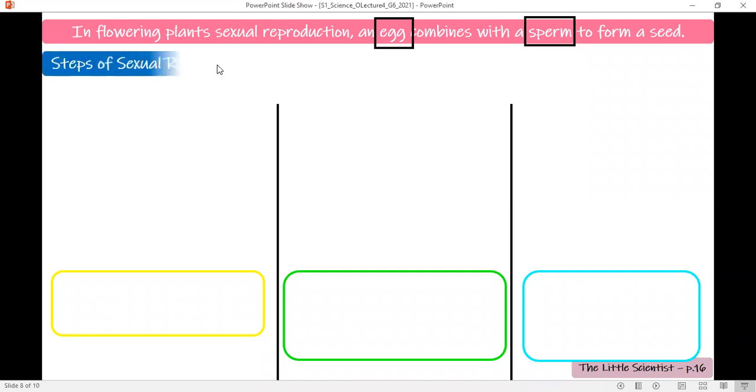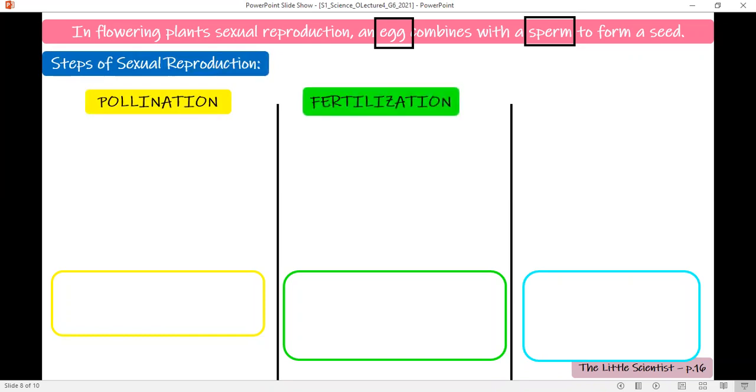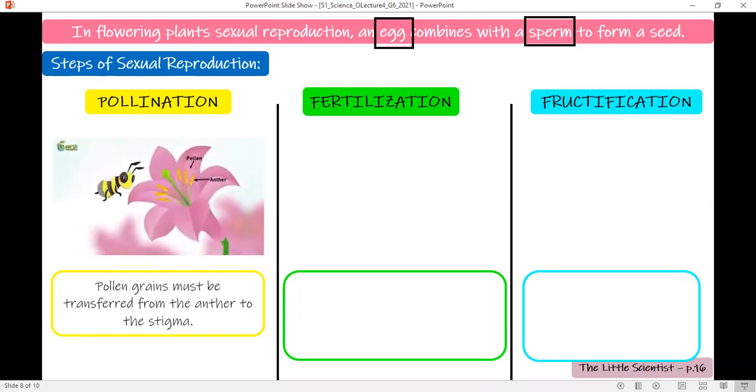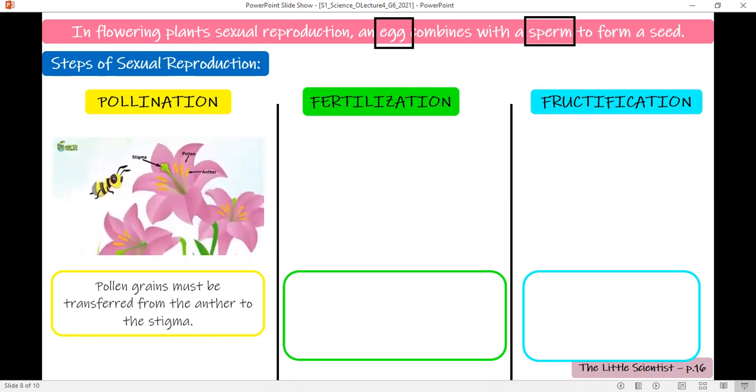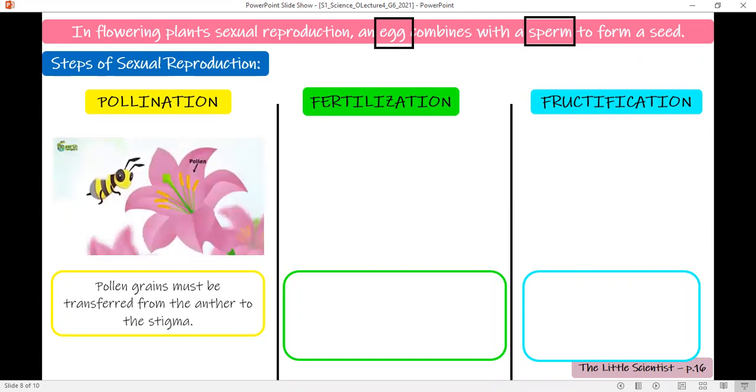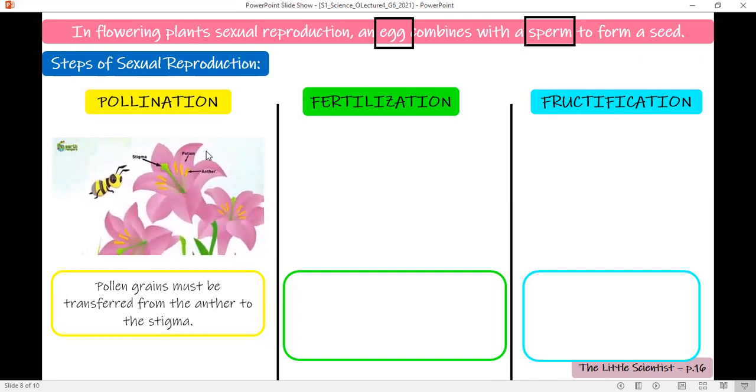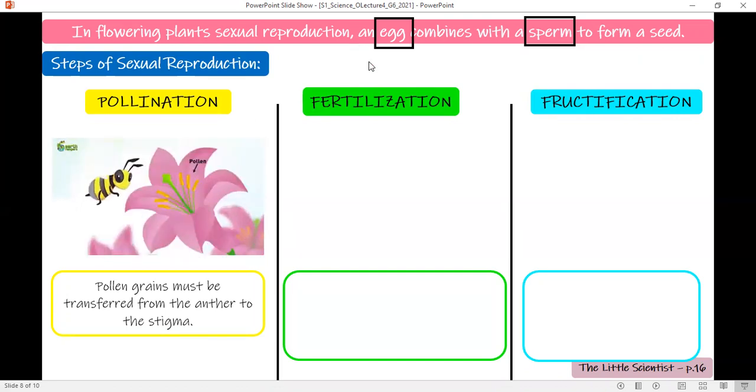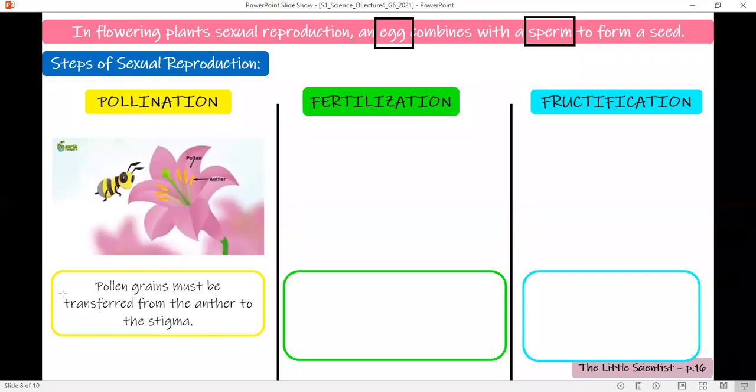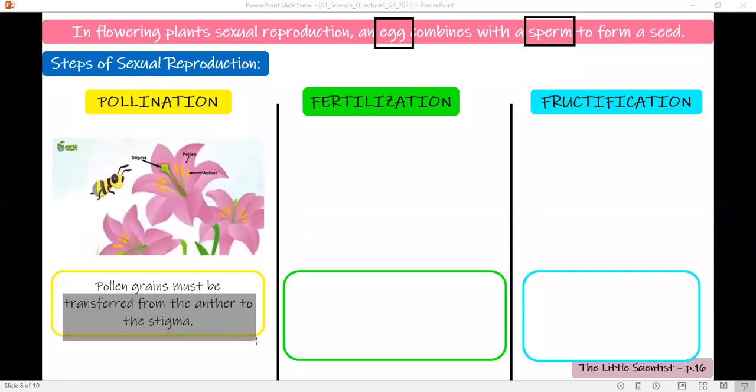I'll talk in detail about the different steps of reproduction in flowering plants. What should happen for an egg or ovule to combine with a sperm? You will need to put an egg next to a sperm—a female sex cell with a male sex cell. The first phase is pollination. The second one, fertilization. The third one, fructification. Let's start by pollination, which is the easiest one. Pollen must be taken from the anther to the stigma. This is pollination—transferring pollen from the anther to the stigma.